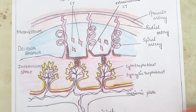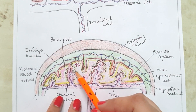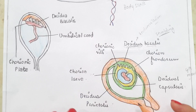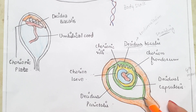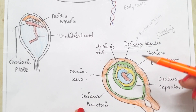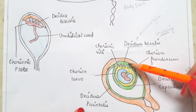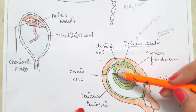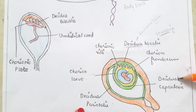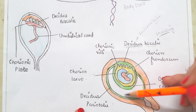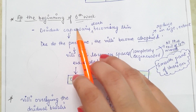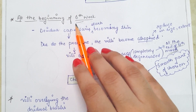The intervillous spaces are lined by syncytiotrophoblast cells and are developed from lacunar spaces. The decidua — the inner lining of the uterine cavity during pregnancy — has three regions: the decidua basalis where the embryo is attached and the placenta forms, the decidua capsularis which covers the growing embryo, and the decidua parietalis which lines the rest of the uterine cavity.